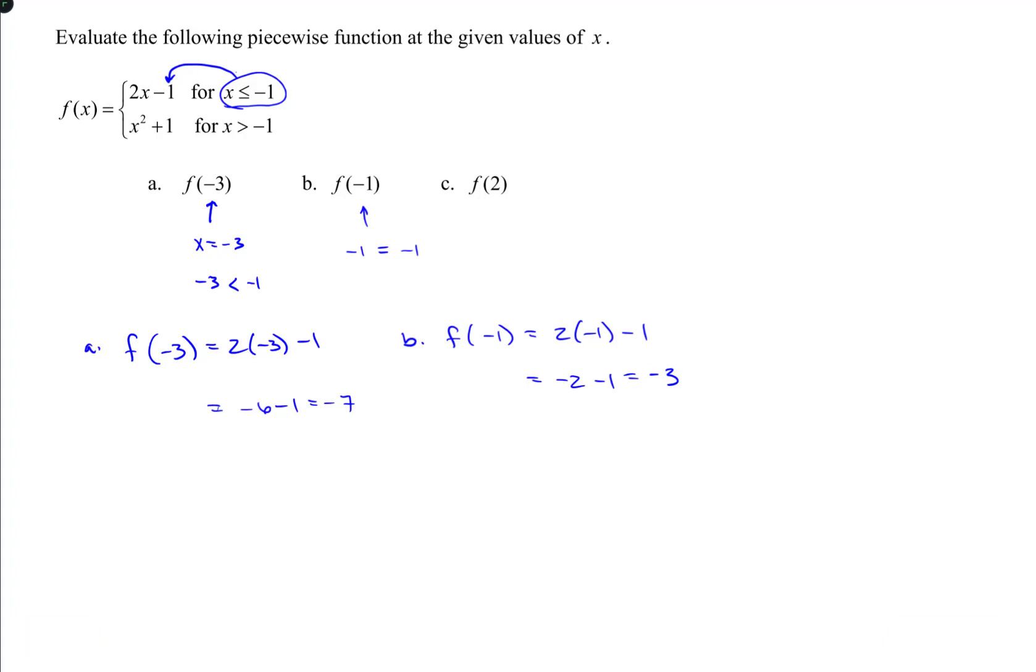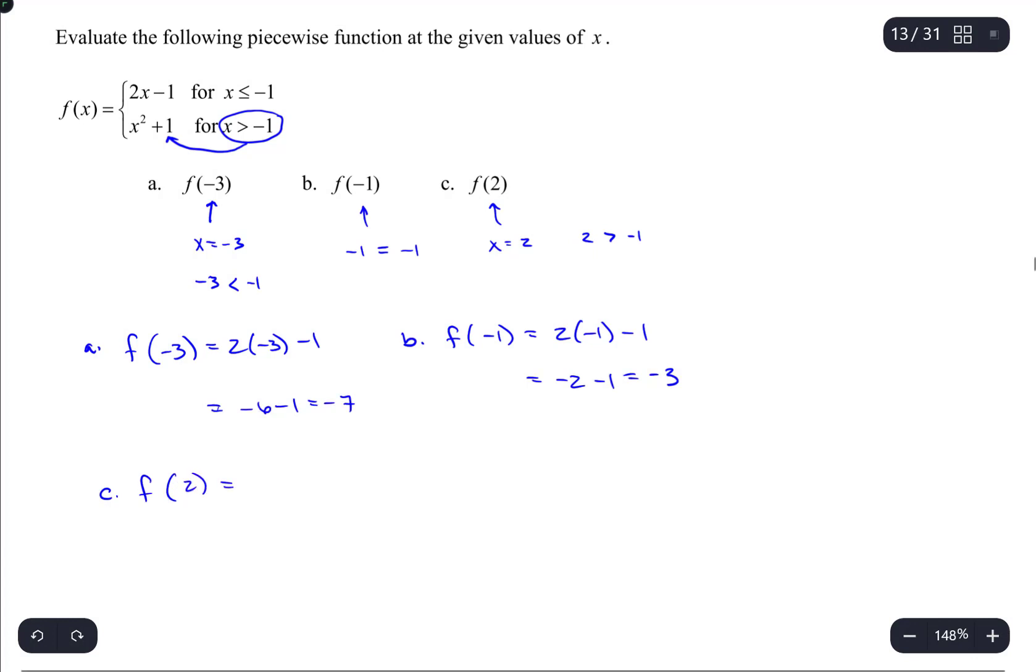So for part c, we have x equals 2. And when we compare that to negative 1, 2 to negative 1 is larger. And since x is larger than negative 1 now, that tells me this statement qualifies. So I would use this function. So for part c, f of positive 2 is going to be evaluated as 2 squared plus 1, which is 4 plus 1, or 5.